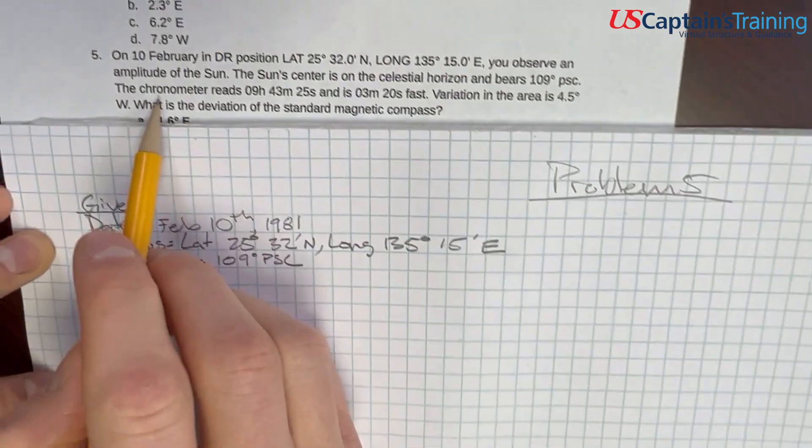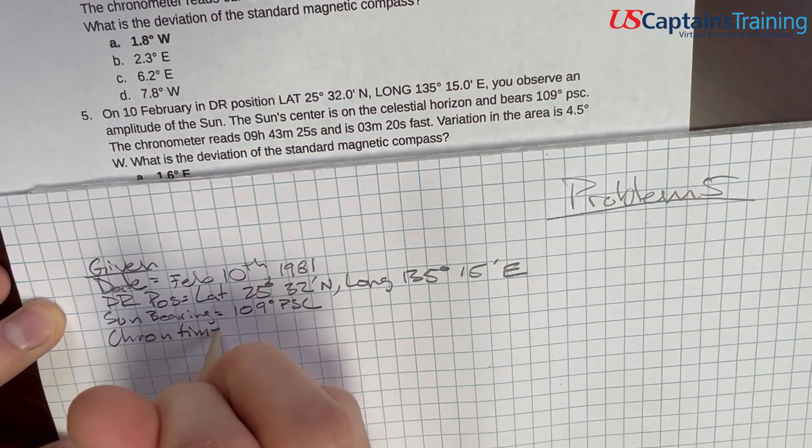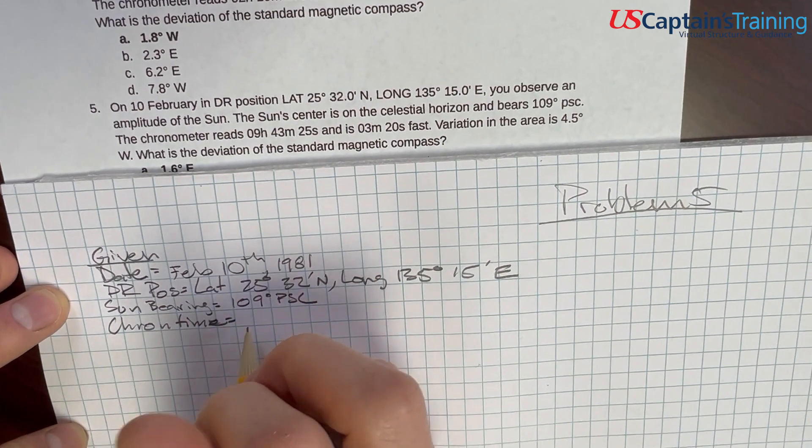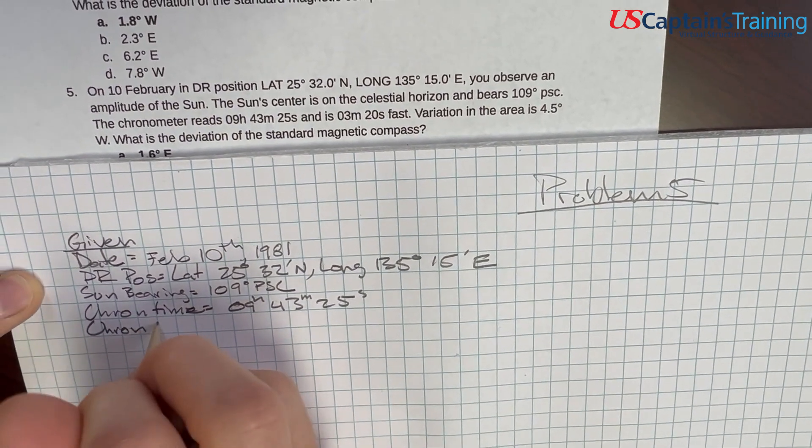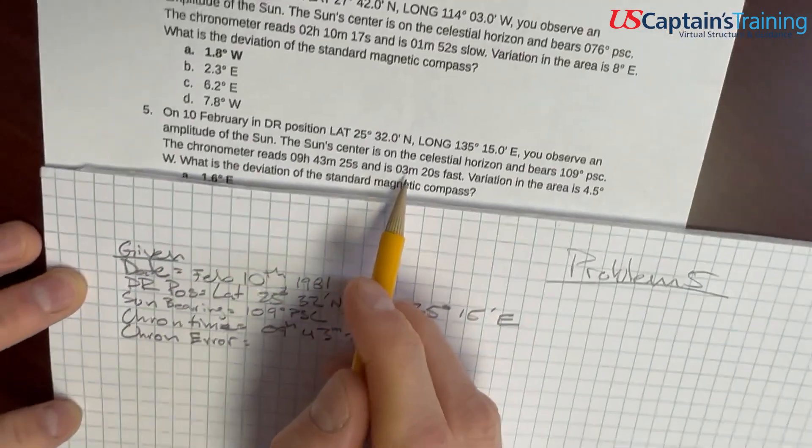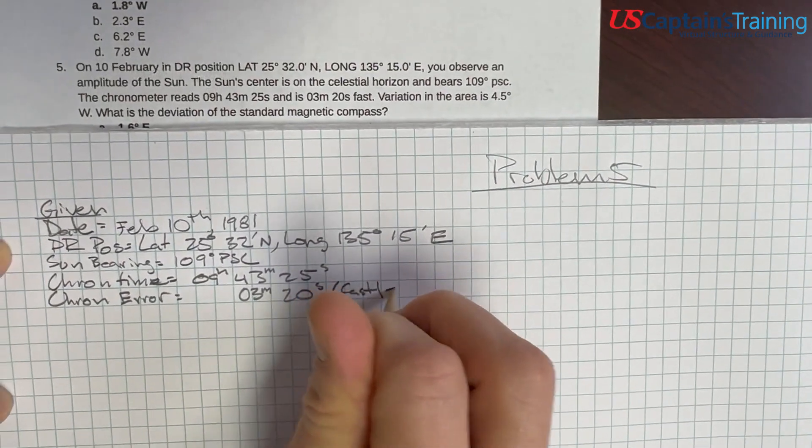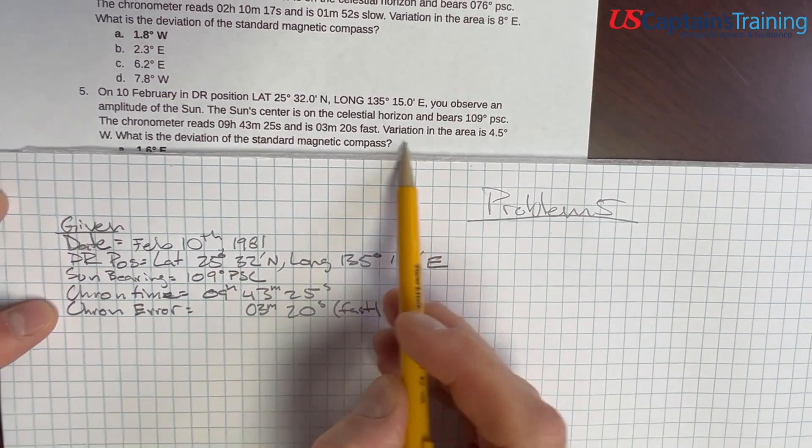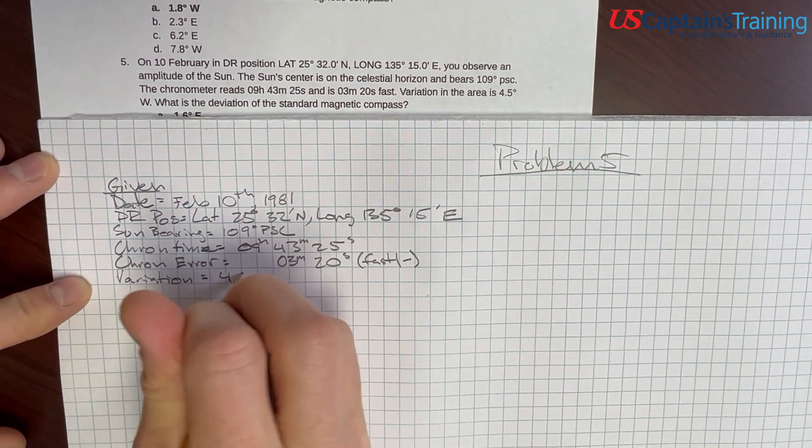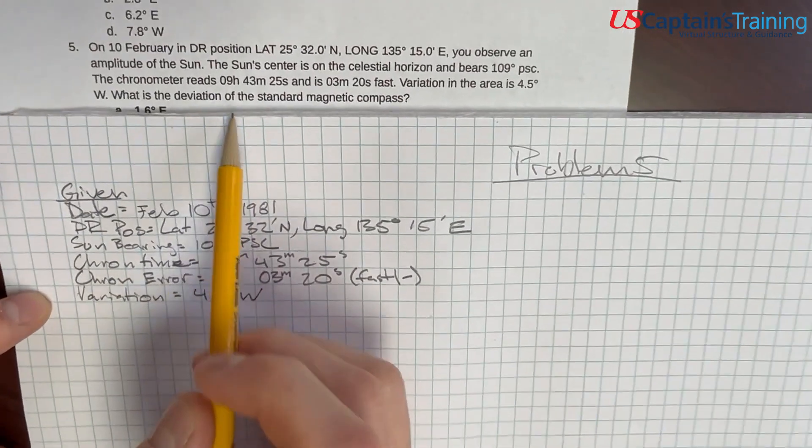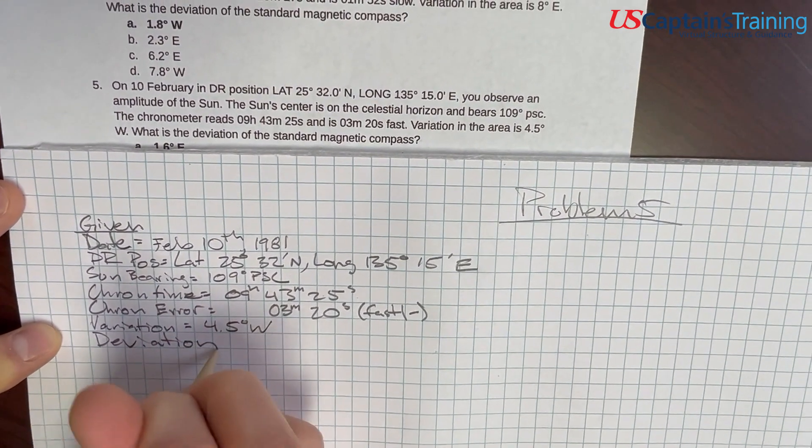The chronometer reads 943.25 hours, minutes, seconds. And it gives us the chron error right after that. That error is 3 minutes 20 seconds fast. So we need to subtract it to get it back on track. Variation in the area is 4.5 degrees west. And then it asks the question, what is the deviation of the standard magnetic compass? So what we are looking for is deviation.